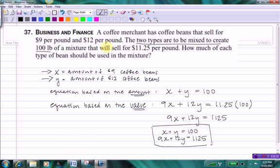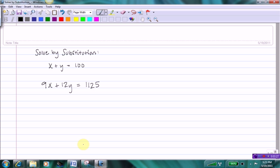So let's solve this system using substitution. And so we're just going to solve one of the equations for one of the variables. I'm going to take this first equation and solve it for Y. Subtracting X from both sides gives me Y equals 100 minus X, and this is the expression I'm then going to plug in for Y into the second equation.